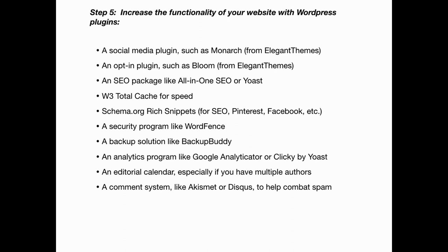Step five: increase the functionality of your website with plugins. I recommend a social media plugin, an opt-in plugin such as Bloom that makes it easy to incorporate an opt-in box on your blog, an SEO package, W3 Total Cache in order to improve speed, a security program like Wordfence, as well as a backup solution like BackupBuddy.